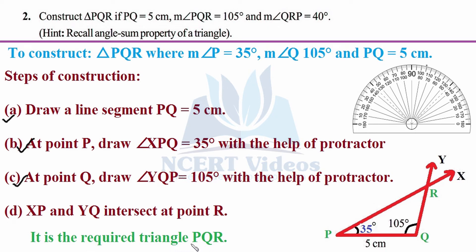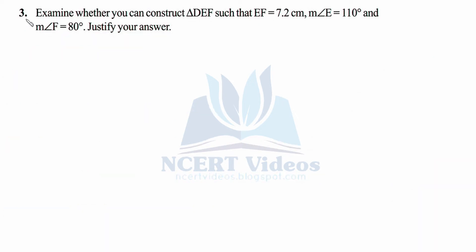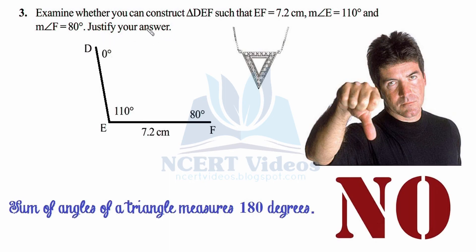The triangle is now completed, giving you the required triangle PQR — that is the answer to Question 2. Question 3: Examine whether you can construct triangle DEF such that EF measures 7.2 centimeters, angle E equals 110 degrees, and angle F equals 80 degrees. Justify your answer. If you try to construct this triangle, you begin by drawing EF = 7.2 centimeters and constructing 110 degrees at E using a protractor.